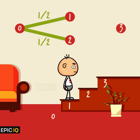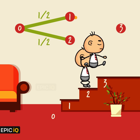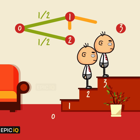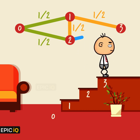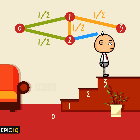At step 1, he has two choices again. He can go to the second step or the third step. So P(1 to 2) is half, and P(1 to 3) is half. At step 2, you will notice that little Ted has just one choice: go to step 3. So P(2 to 3) will be 1.